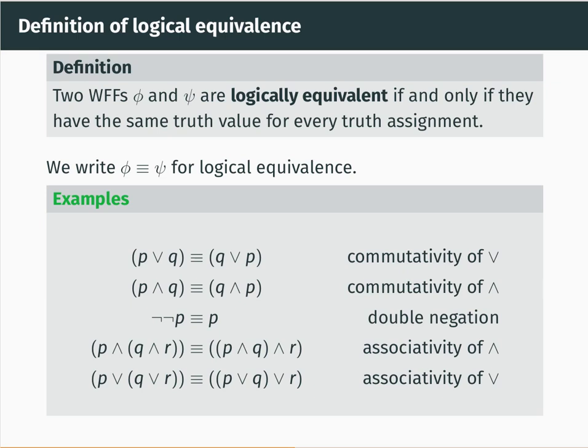Here's the definition of logical equivalence. Two well-formed formulas are logically equivalent if and only if they have the same truth value for every different truth assignment to the propositional variables involved in those well-formed formulas. When we have two logically equivalent well-formed formulas, we notate that by writing a triple equals sign.